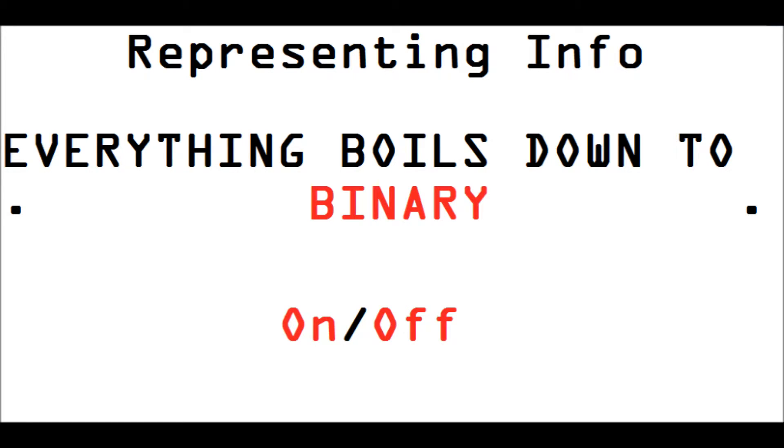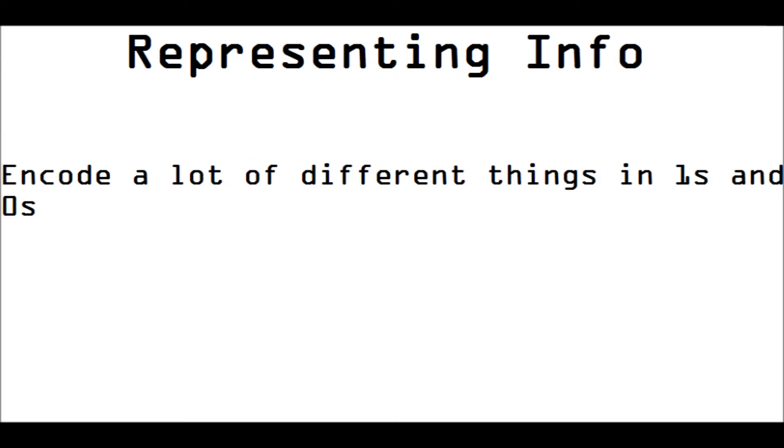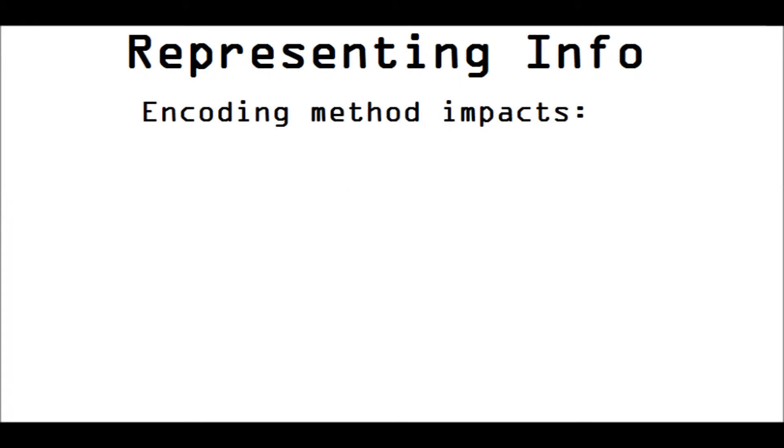And so that is on, off. If the current is on, it is a one. If the current is off, it is a zero. So the question is, how do we encode a lot of different things in just ones and zeros? We have to encode it through some method.